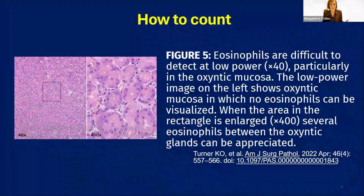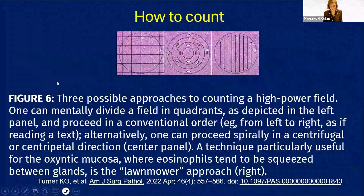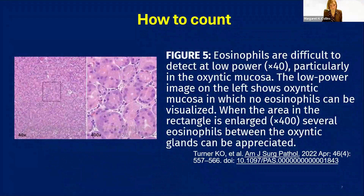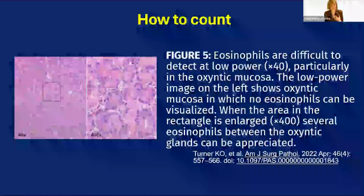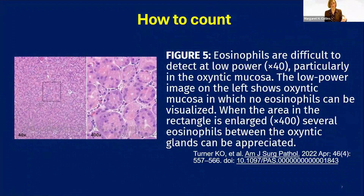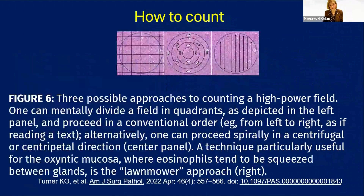There may not be a right and wrong answer for some structures. The best we can do — and it's fine — is to be internally consistent and use the same criterion from case to case for what we count and what we don't. Regarding how to count: a poorly oriented high-power field is very difficult to count accurately. Looking at a field at low power, you may see no eosinophils; once you get to higher power, there certainly are eosinophils. One method is to put a grid in an eyepiece, counting from one area of the grid to another.